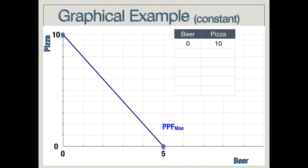We're going to start off by showing you what a production possibilities frontier looks like that has constant opportunity cost and go through a few examples. Here we have the production possibilities frontier of Mo. If Mo spends all of his time making pizza he can make 10 pizzas in a given day, and if he spends all of his time producing beer he can produce five beers in a given day. Every point along the PPF represents levels of output that are attainable for Mo if he's using all of his resources efficiently.